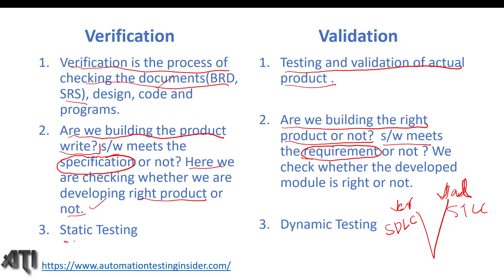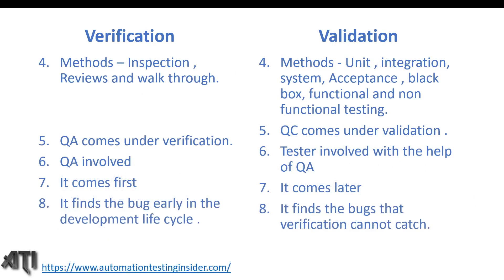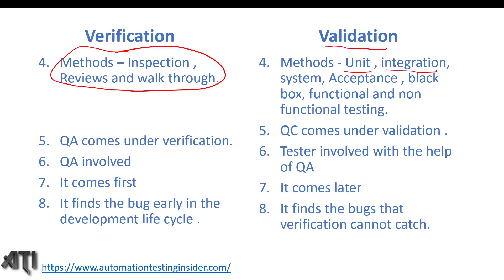Verification comes under static testing and validation comes under dynamic testing. The different methods of static testing are inspection, reviews, and walkthroughs — here we review and go through documents. For validation, we have unit testing, integration testing, system testing, and acceptance testing — these are the four levels of testing. In validation, we follow all levels of testing as well as all functional and non-functional testing.